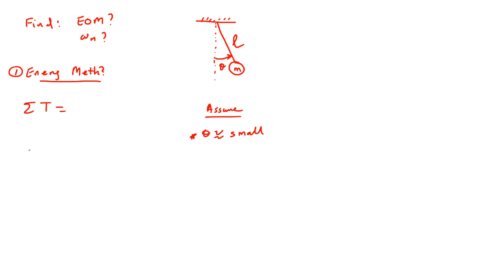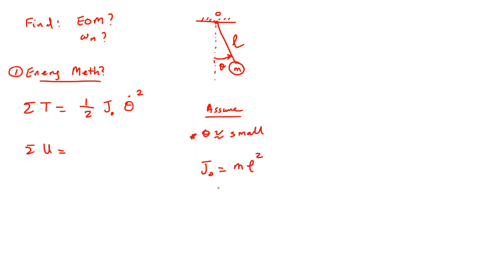Now, how do we use the energy method? First we need to find the total kinetic energy and total potential energy. For the kinetic energy, look at the mass — we have a mass moving in torsional motion. It's easier to use torsional motion, so assume this is the origin. Kinetic energy is one-half times the mass moment of inertia J_O times theta-dot squared. J around O from the parallel axis theorem is ml squared.